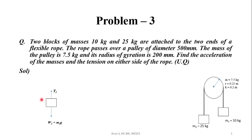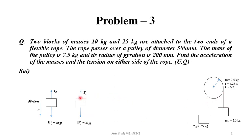For the free body diagram of M1: M1 will be moving in the upward direction with acceleration A. The weight W1 acts vertically downward, given by M1 times g. Let the tension on this side be T1. M2 will be moving in the downward direction with the same acceleration A. We need to find the acceleration and the tension on both sides.